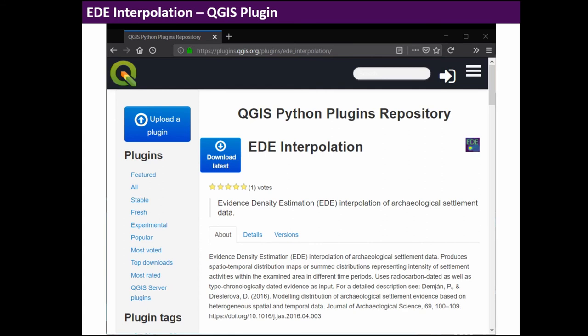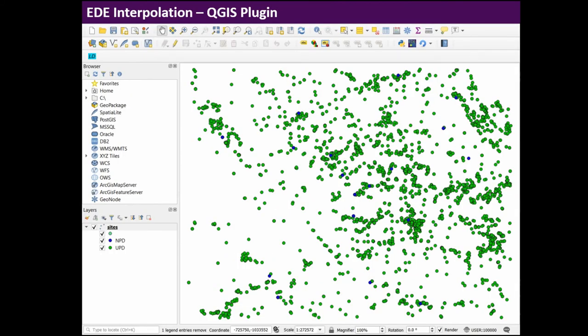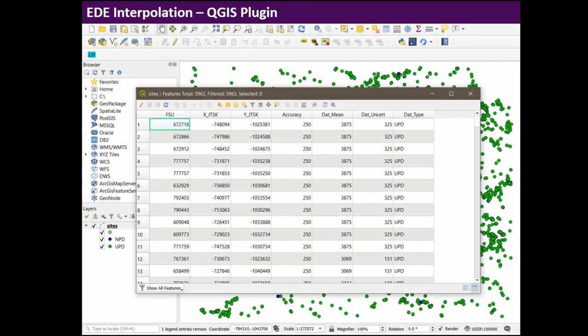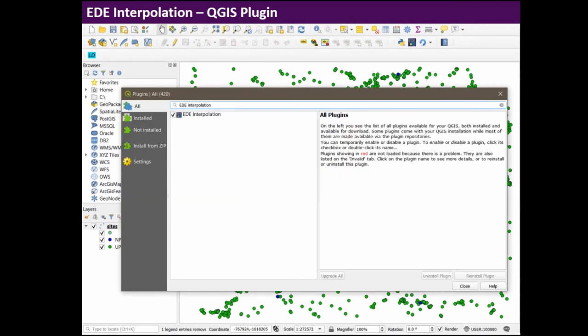To conclude, I promised something practical. I created a QGIS plugin which is relatively easy to use. You can find it using QGIS. First you need your data, your spatial data preferably as a point file. It has to indicate the accuracy in meters, the mean of the dating, the uncertainty in the dating, the dating type, either uniform probability distribution for archaeological dating or normal probability distribution NPD for C14 dating. Then you install this plugin by searching for EDE interpolation.